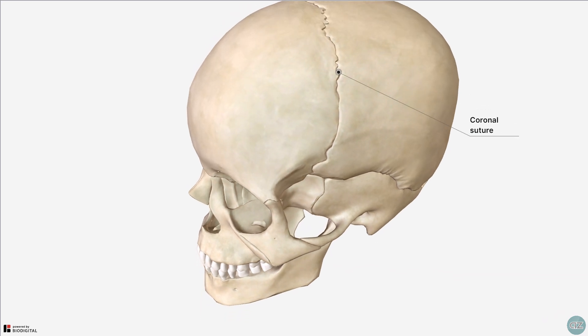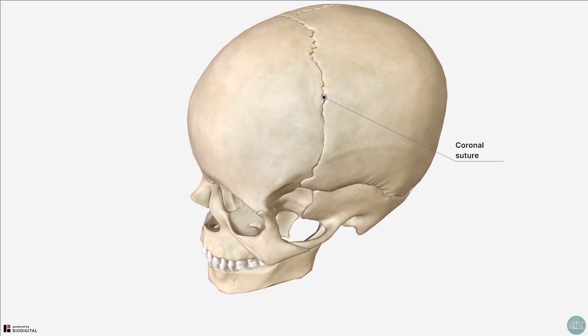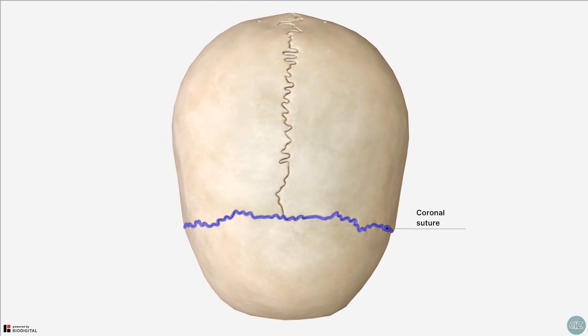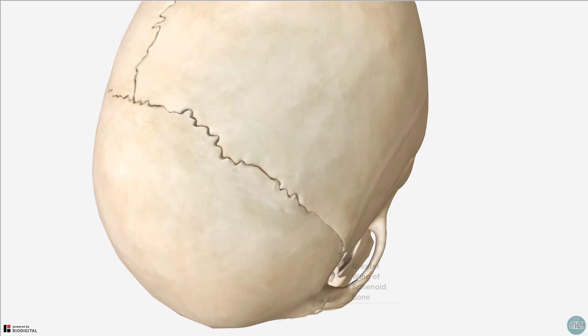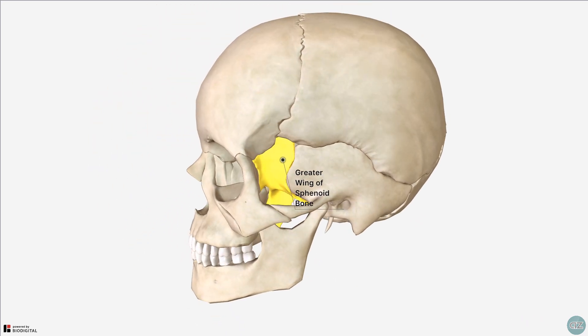Looking at the posterior aspect of the frontal bone, you can see that it articulates with the parietal bone at a suture known as the coronal suture because it runs in the coronal plane. The lower part of the posterior edge of the frontal bone articulates with the greater wing of the sphenoid bone at the sphenofrontal suture.